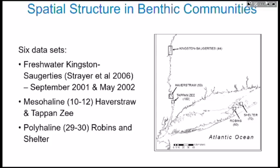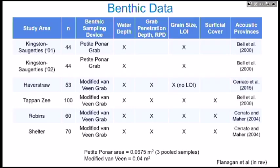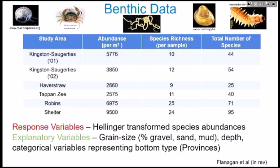Now, spatial structure in benthic communities. There are six datasets: two from the freshwater portion of the Hudson donated by Dave Strayer; two mesohaline datasets from Haverstraw Bay and Tapice; and two from the Peconics — east of Robbins Island and east of Shelter Island. These involved spatial sampling with 44 to 100 grab samples, plus grain size data and sonar surveys. Roger Flood collected sonar data to describe the bottom. The species data includes amphipods, crabs, polychaetes, and 25 to almost 100 different species.